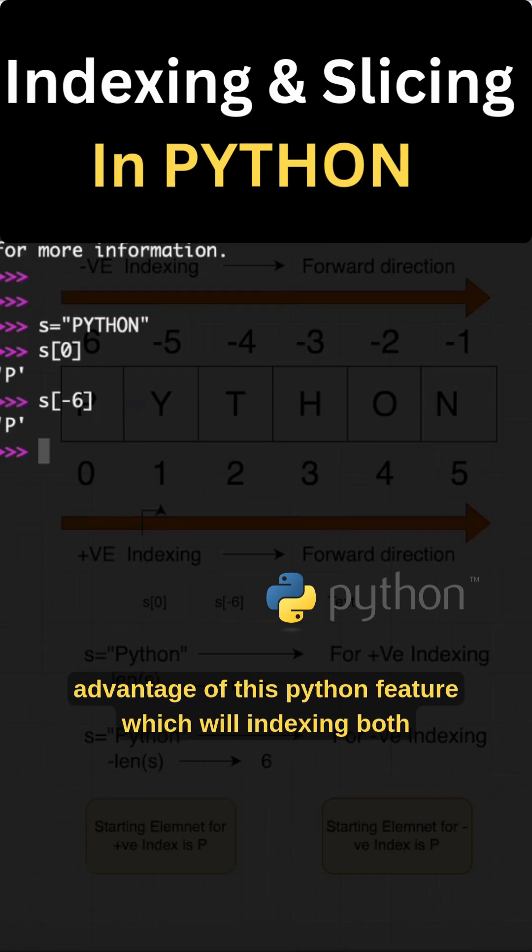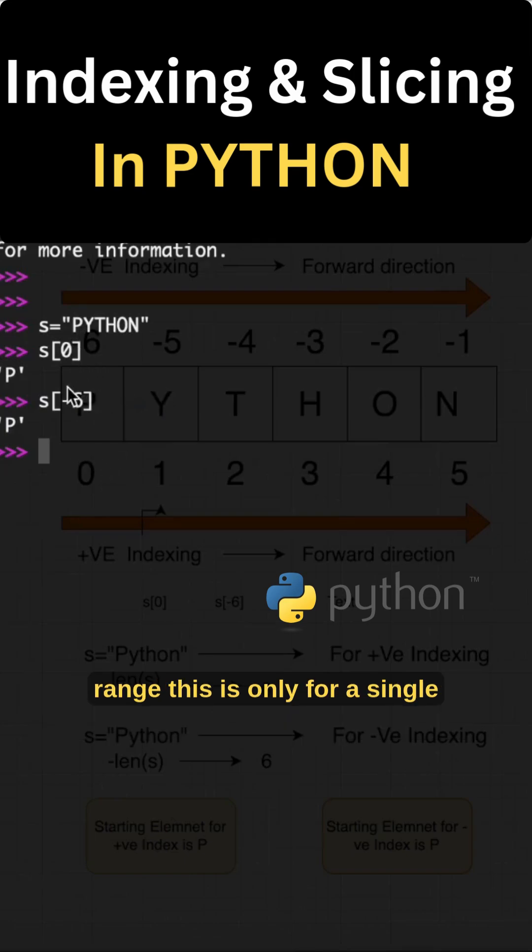That is the main advantage of this Python feature which will indexing both the positive and negative indexing. Suppose we want to get the certain range, this is only for a single value, that is for indexing. So we'll move on to the slicing.